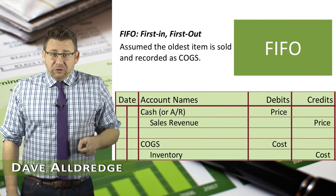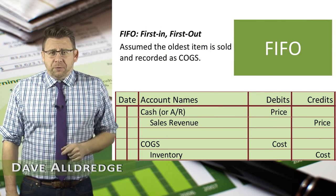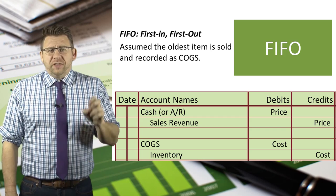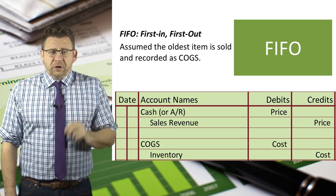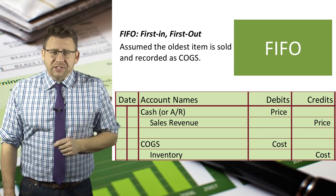FIFO Inventory Valuation, which stands for first in, first out, results in the oldest purchases being recorded as cost of goods sold.